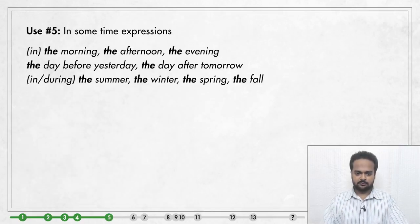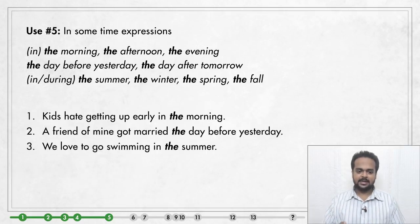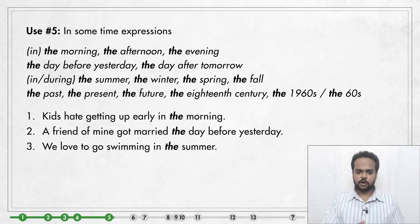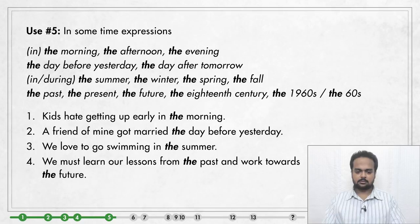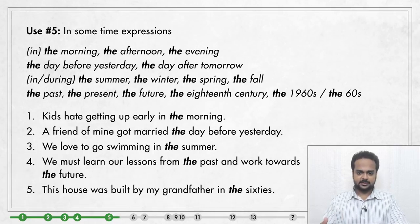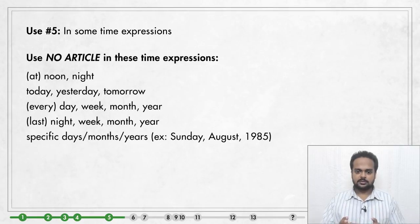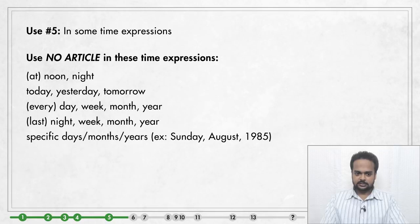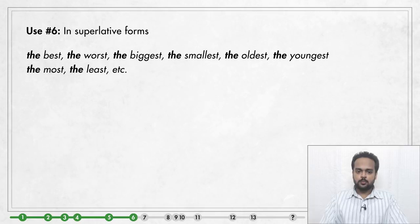Use number five: use 'the' with some time expressions — for example 'in the morning,' 'the day before yesterday,' 'in the summer.' We also say 'the past,' 'the present,' and 'the future' — probably because there's only one of each. For example: 'We must learn our lessons from the past and work towards the future.' 'The' also appears in expressions like 'the 18th century,' 'the 1960s,' or 'the 60s.' For example: 'This house was built by my grandfather in the 60s.' Be careful though — many time expressions are used without articles, which we'll cover in the next lesson.